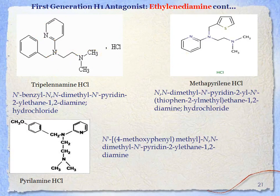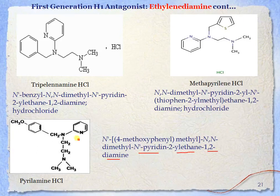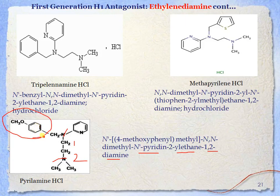The second ethylenediamine example is pyrilamine (mepyramine). Its IUPAC name is N-[(4-methoxyphenyl)methyl]-N,N-dimethyl-N'-(pyridin-2-yl)-1,2-ethanediamine. The structure contains a 4-methoxyphenyl group, a 1,2-diamine ethane chain, N,N-dimethyl substitution, and a 2-pyridyl group.